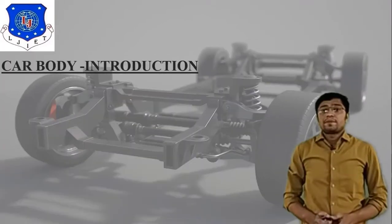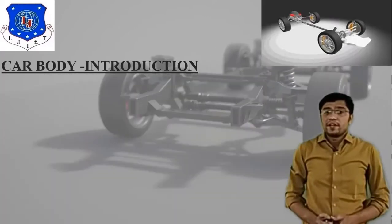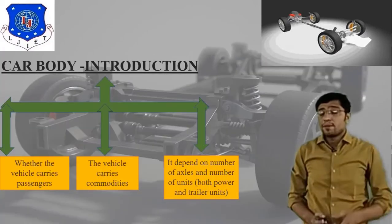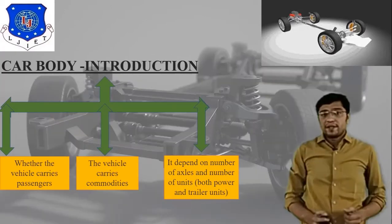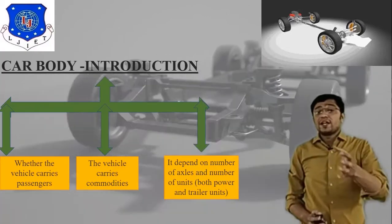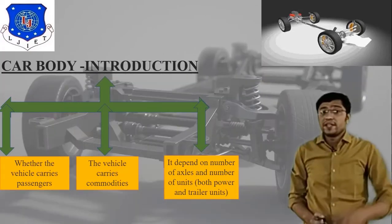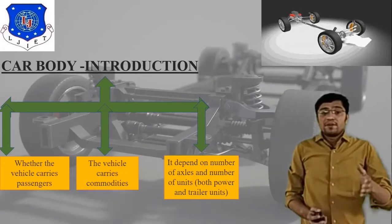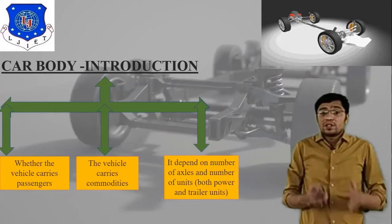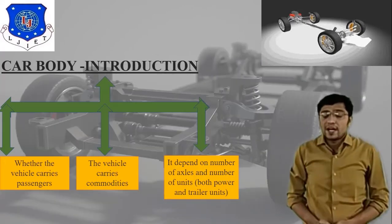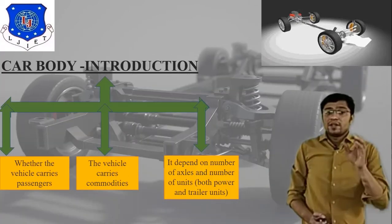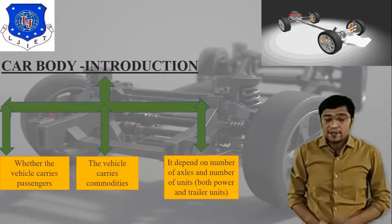The next important topic is car body or car body design. Here in the image you can see that there is one frame over which a car body is placed. Car body design mainly depends on three parameters: whether the vehicle carries passengers or commodities, and if so, it depends on the number of axles and number of units. Both power unit and trailer unit are different. This is what the car body frame is designed around, with the car body placed over it.